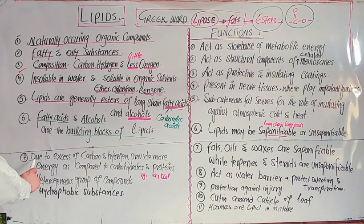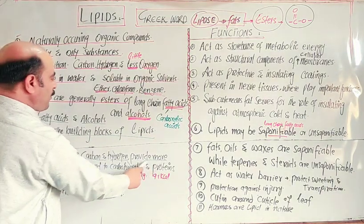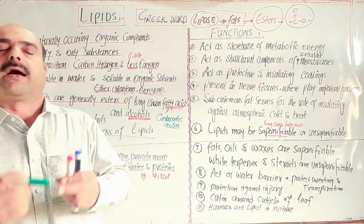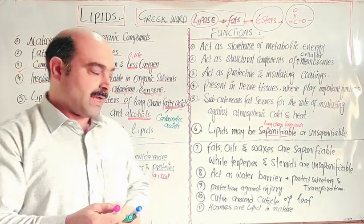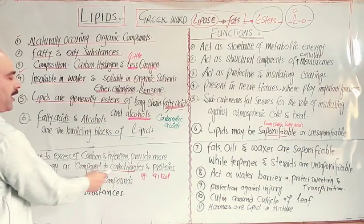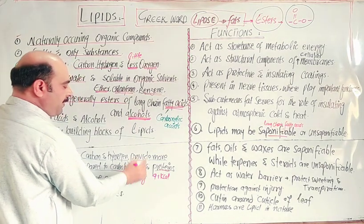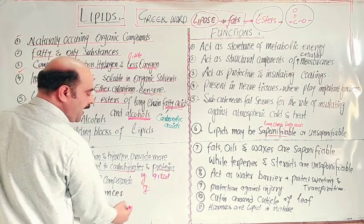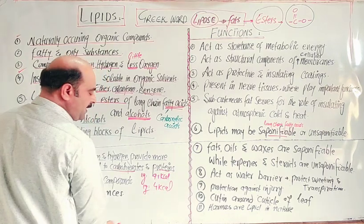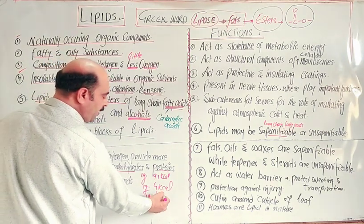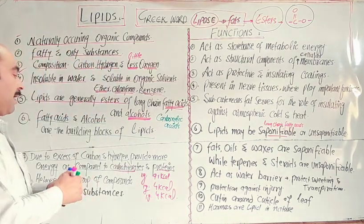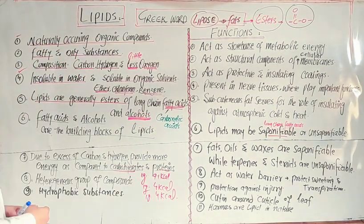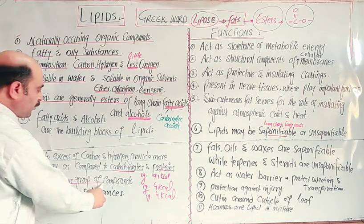Due to excess of carbon and hydrogen, lipids provide more energy compared to carbohydrates and proteins. One gram of lipids provides 9.1 kilocalories of energy, while one gram of carbohydrate provides 4 kilocalories and one gram of protein also provides 4 kilocalories. So lipids provide twice the energy compared to other food components.